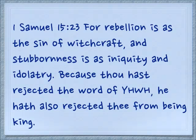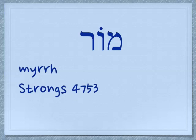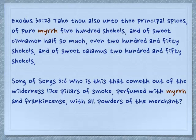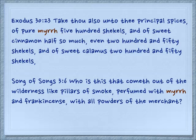Another word from this root is 'mor,' which is myrrh — the English is taken directly from the Hebrew. In Exodus 30:23, 'Take thou also of the principal spices of pure myrrh, 500 shekels, and of sweet cinnamon, half so much, even 250 shekels, and of sweet calamus, 250 shekels.' This is for making the anointing oil. In Song of Songs 3:6, 'Who is this that cometh out of the wilderness like pillars of smoke, perfumed with myrrh and frankincense?' So we see that myrrh has a special pleasant odor.